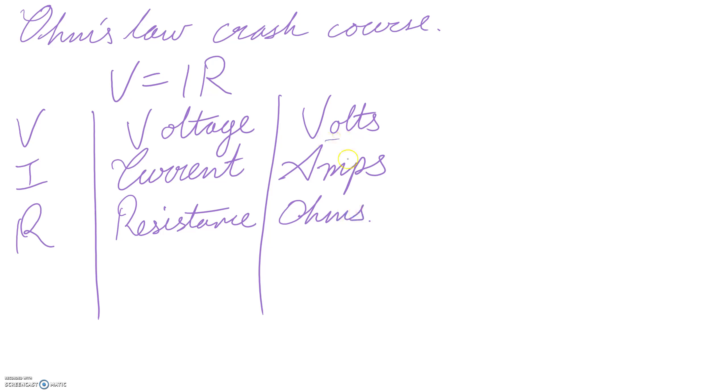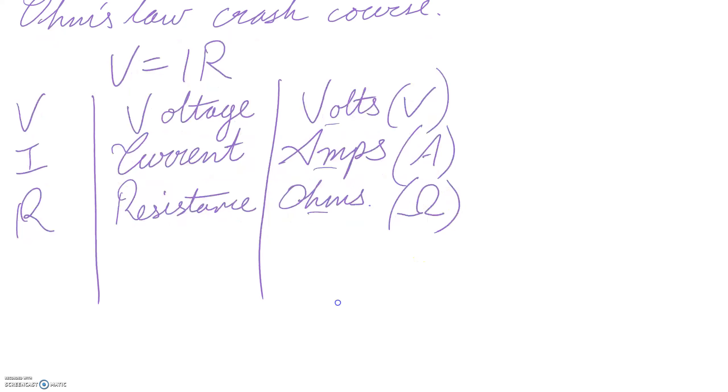Now we don't normally write out the entire unit, just like we don't write out meters when we calculate perimeter. We just put an M. So you'll normally see volts written as V, amps written as A, and we get a bit funky with ohms and use a bit of Greek.